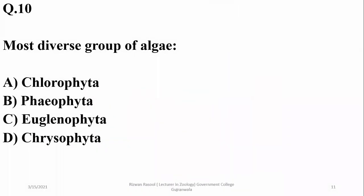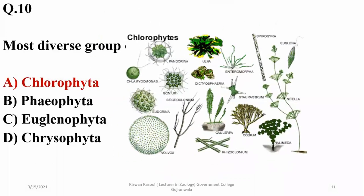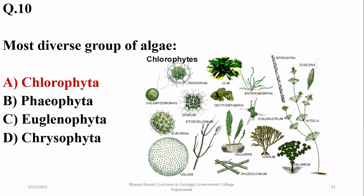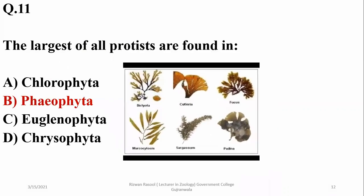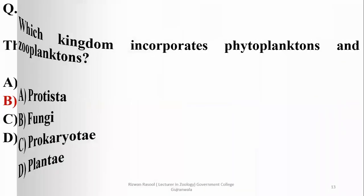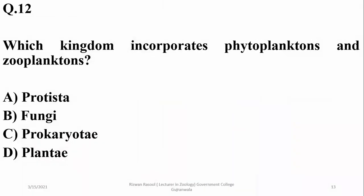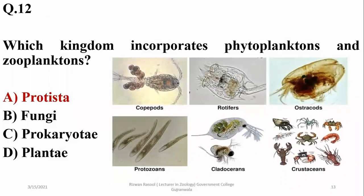The most diverse group of algae is Chlorophyta (green algae). The largest of all protists are found among brown algae or Phaeophyta, also known as kelps, which have the largest size among algae as well as protists. The kingdom that incorporates phytoplanktons and zooplanktons is Protista, which is the better answer among the given options.